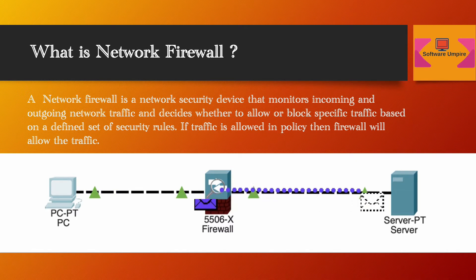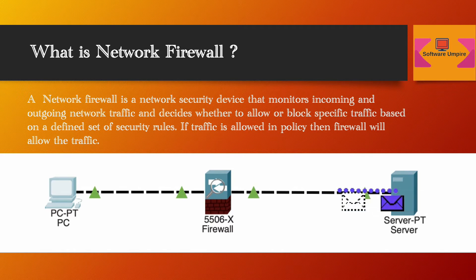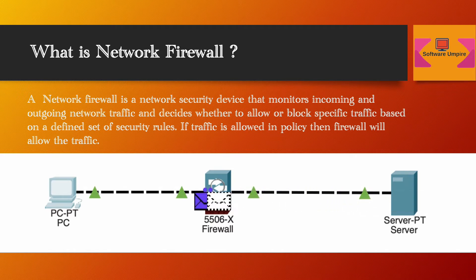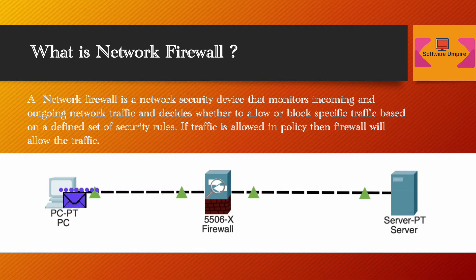In the below example, HTTP traffic is allowed from PC1 to the server in the firewall policy. You can see that web traffic from PC1 to the server is allowed by the firewall.